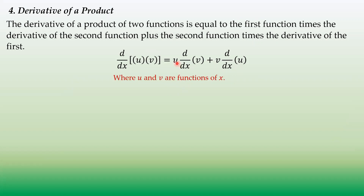So the first function is u, second function is v. We have: first function times derivative of the second, plus second function times the derivative of the first, u. Sometimes abbreviated as u dv plus v du. That is our formula for the derivative of a product. Let's work through some examples.